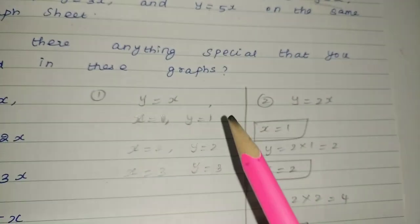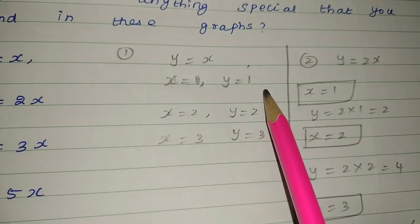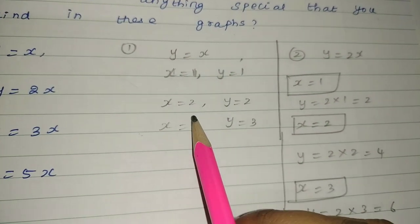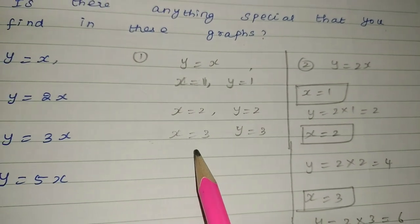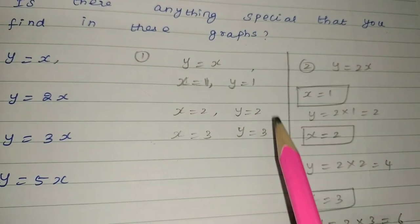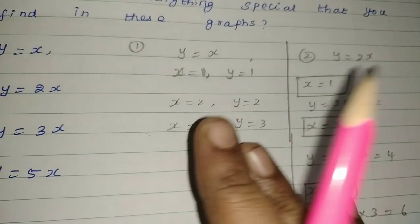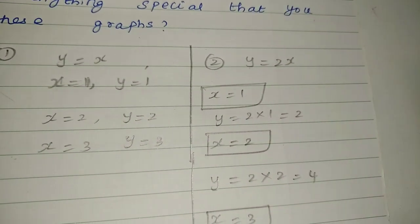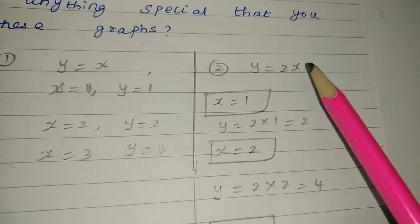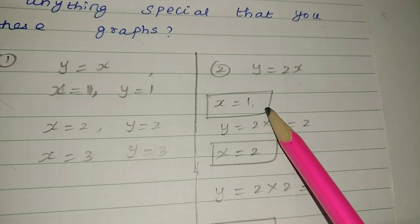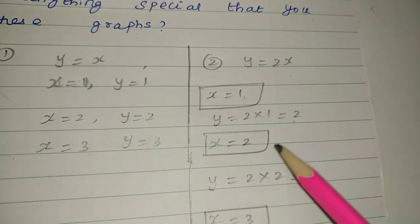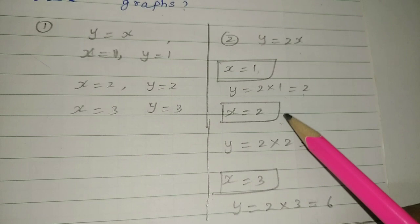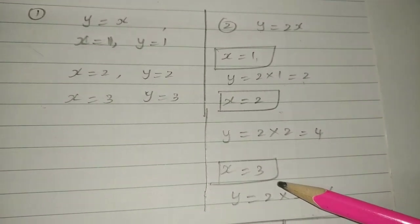For y = x: when x = 1, y = 1; when x = 2, y = 2; when x = 3, y = 3. For y = 2x: when x = 1, y = 2; when x = 2, y = 4; when x = 3, y = 6.